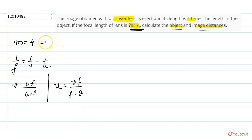Magnification is what? Image height upon object height. Also, image distance upon object distance. The value of m is equal to v upon u. This can be used.